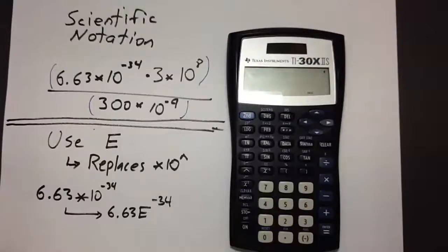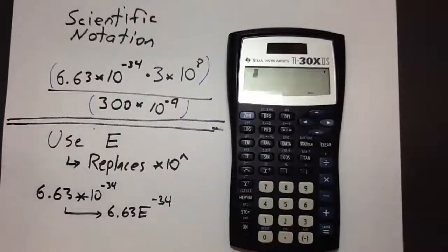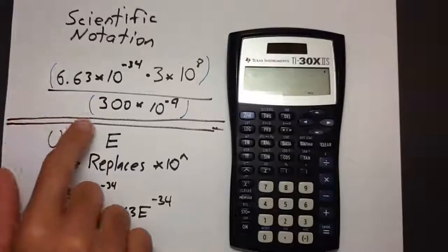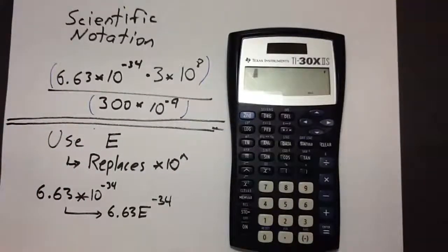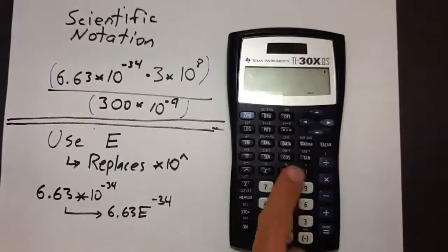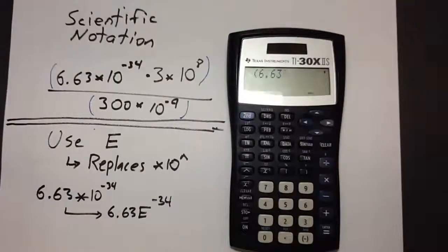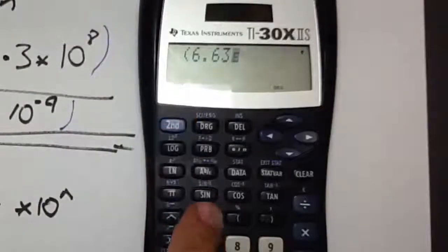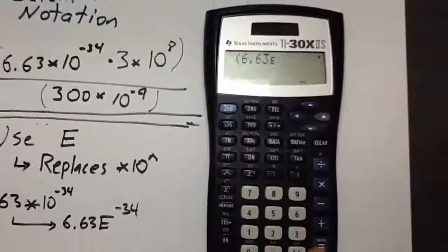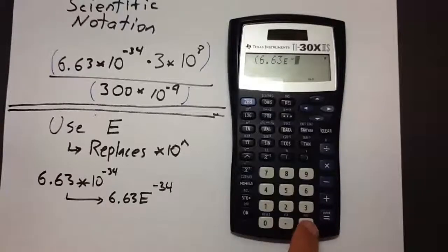We'll start by showing how to enter this expression into the TI-30X2S. We'll need to place parentheses around the numerator and around the denominator, outlined in blue. Those may not be given in the problem, but for this calculator we'll need to enter them because it's not great at handling fractions. Start by placing the left parenthesis and entering 6.63. Next, instead of times, place the uppercase E by pressing 2nd on the x negative 1 button, then press negative 34.